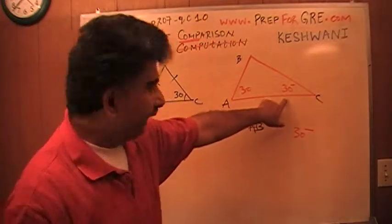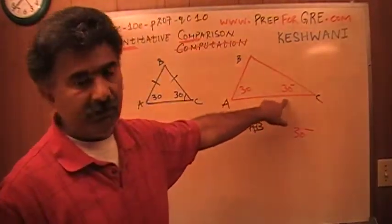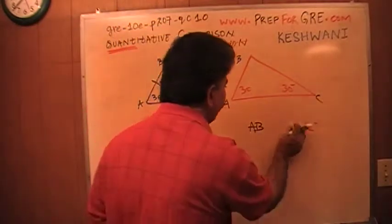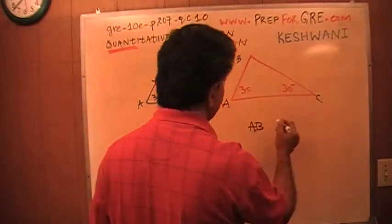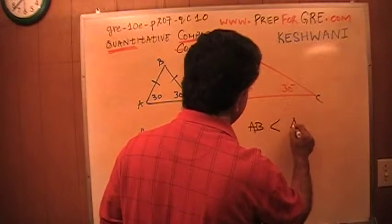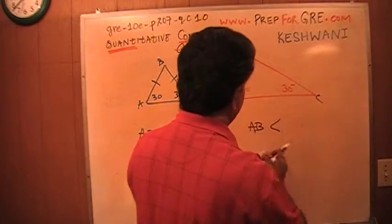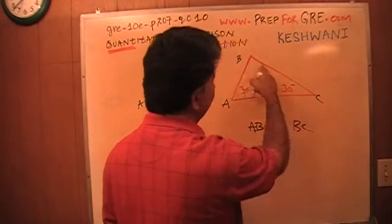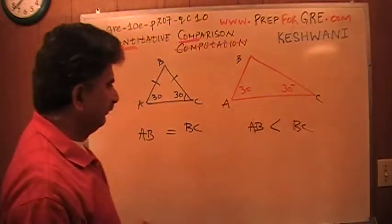Because it faces a smaller angle, whatever it is, it's less than 30. I don't know how much it is, but if it is less than 30, then this side AB is going to be less than side BC because BC faces a bigger angle. So that's another scenario.